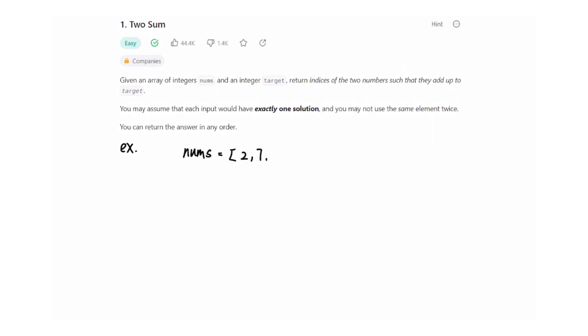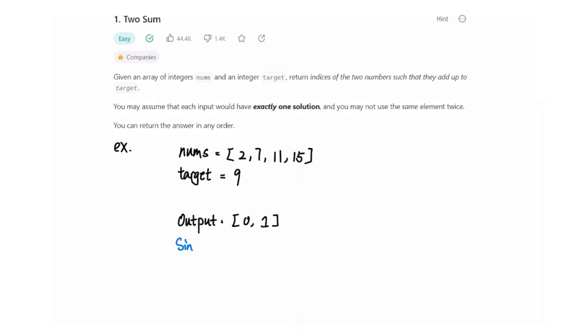Given an array of integers nums and an integer target, return indices of the two numbers such that they add up to target. The input has only one solution and the same elements cannot be used twice. The answer can be returned in any order.